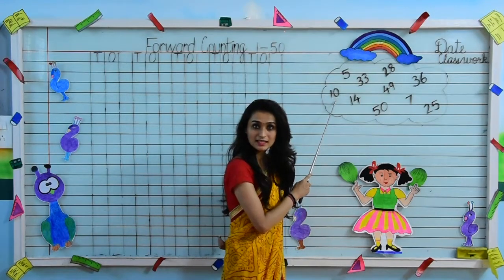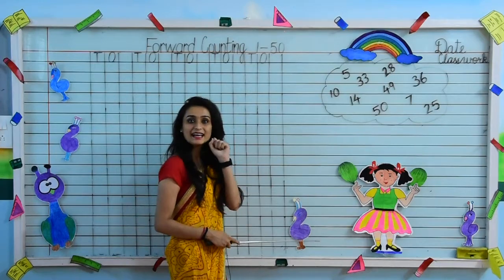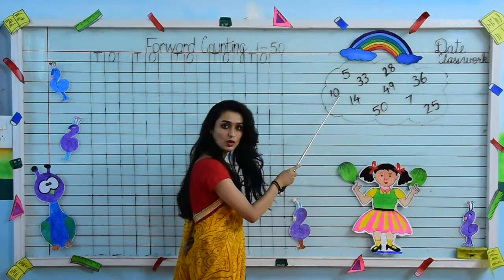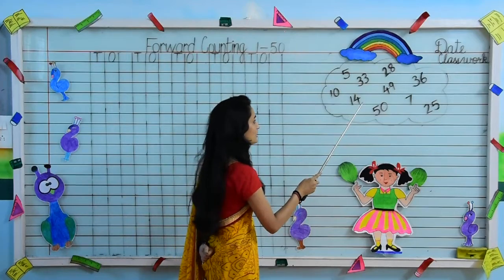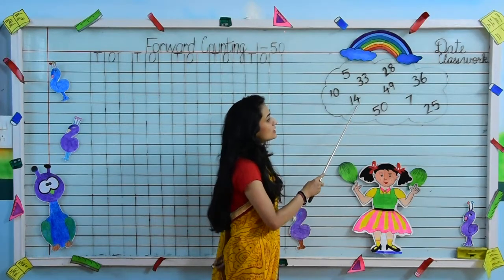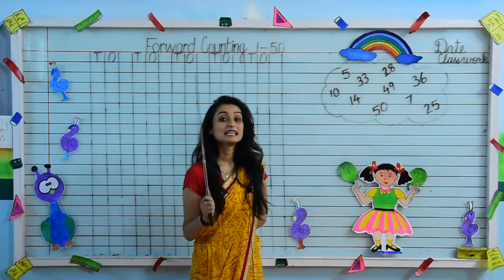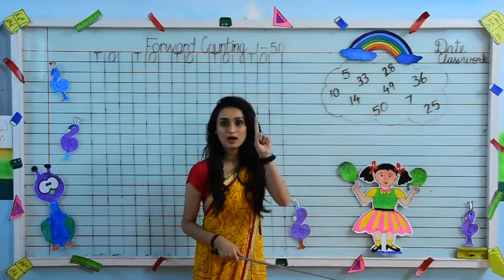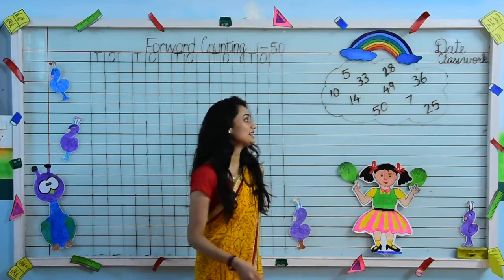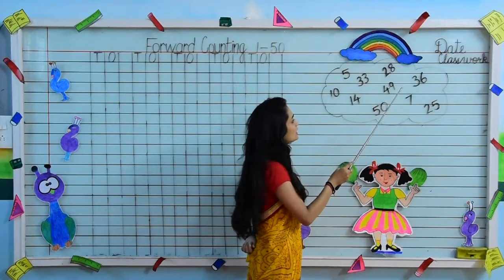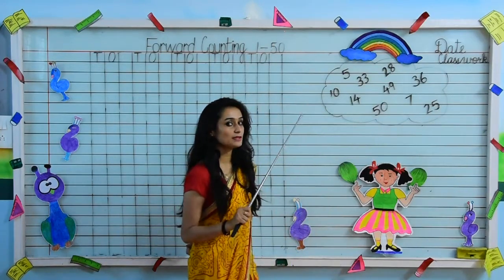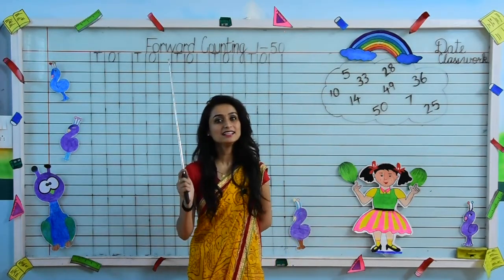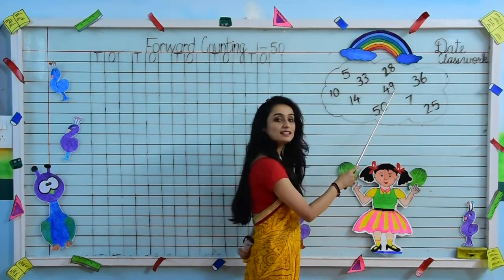Tell me which is this number, kids? Yes, this is 1, 0 — 10. Very nice. Come on the next number. Which is this number? Yes, this one is 1, 4 — 14. Very good, my kids. Come on the next number. This is 4 and a 9, which together makes 4, 9 — 49.